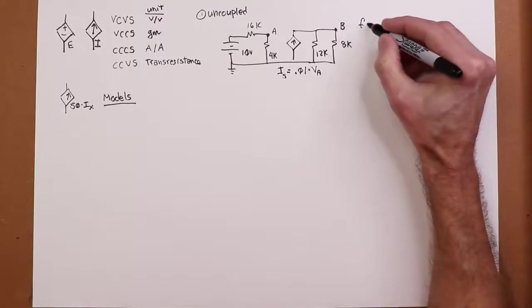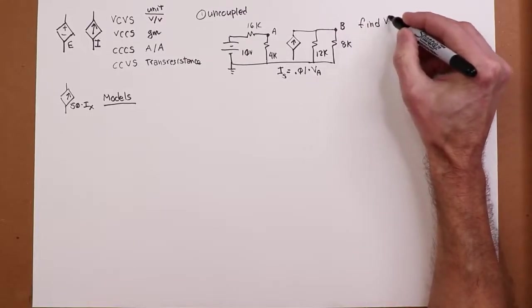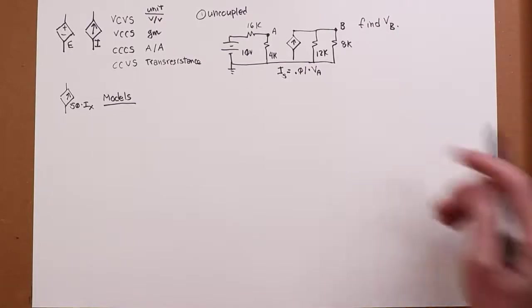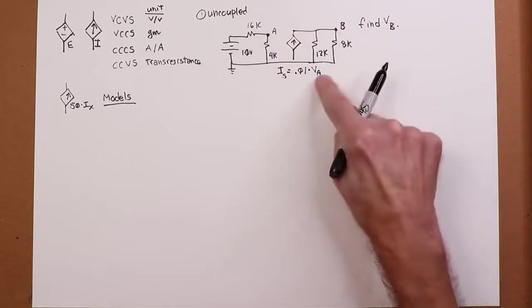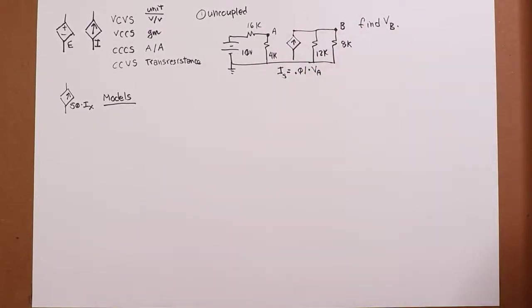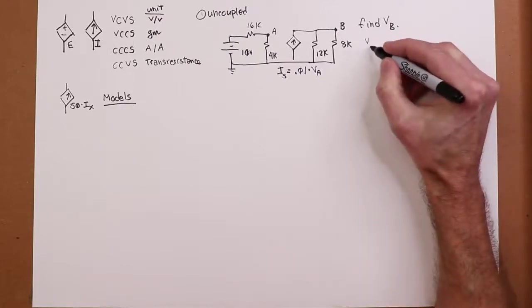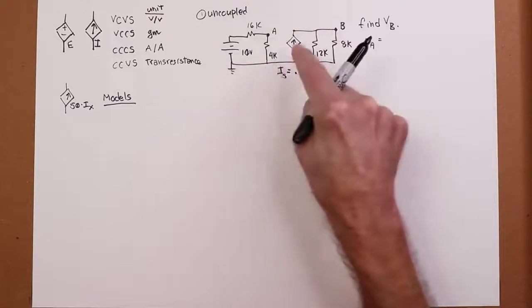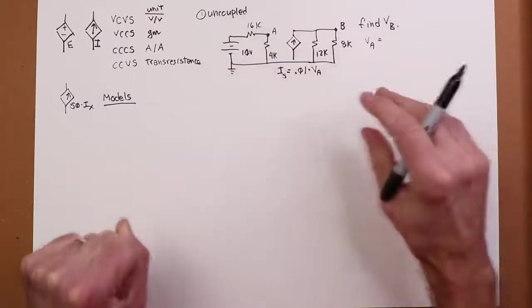All right, so this 0.01 is in fact the transconductance. So this is a voltage-controlled current source. Okay, now I say it's uncoupled because VA, the controlling element, is not affected by the value of this current source. We're going to see an example in a moment where that's not the case. So these things are relatively straightforward to calculate. If the question is, what is VB?